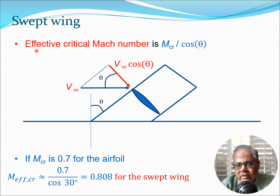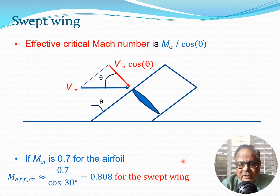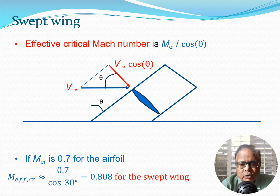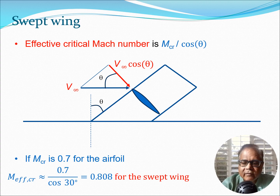The effective critical Mach number for a swept wing becomes M_critical / cosθ, where M_critical is the straight-wing value. For example, if M_critical = 0.7 for a straight wing, a 30° sweep gives an effective critical Mach number of 0.7/cos30° = 0.808. This means the aircraft can fly at a much higher speed without encountering compressibility effects — a very significant advantage.